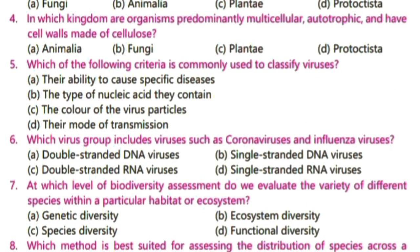Question number 4: in which kingdom are organisms predominantly multicellular, autotrophic, and have cell walls made of cellulose? Options: Animalia, Fungi, Plantae, Protista. Kingdom Plantae includes organisms that are multicellular, autotrophic, and have cell walls made of cellulose.